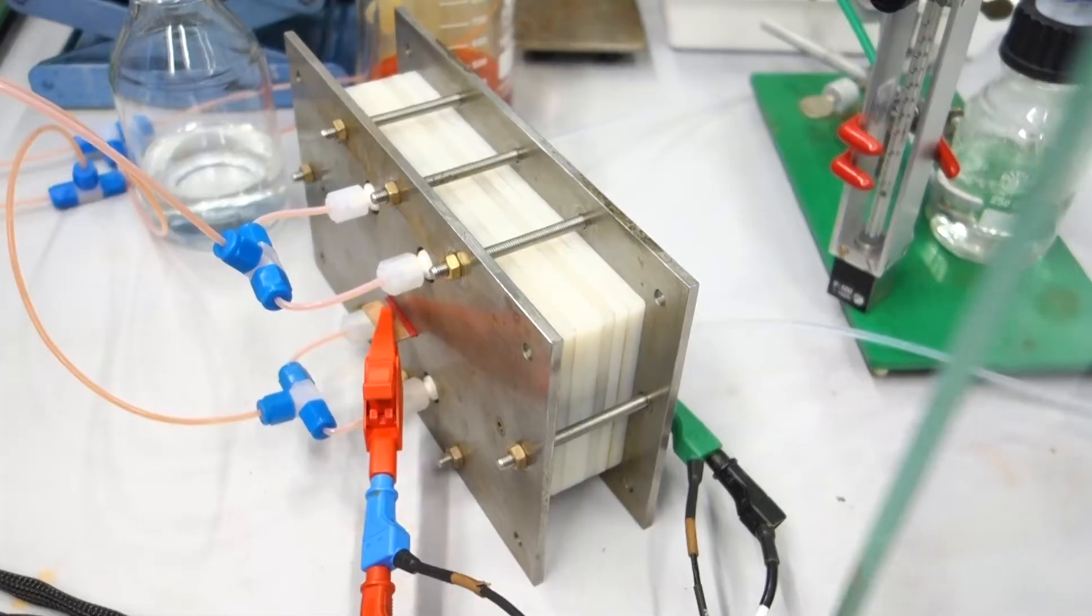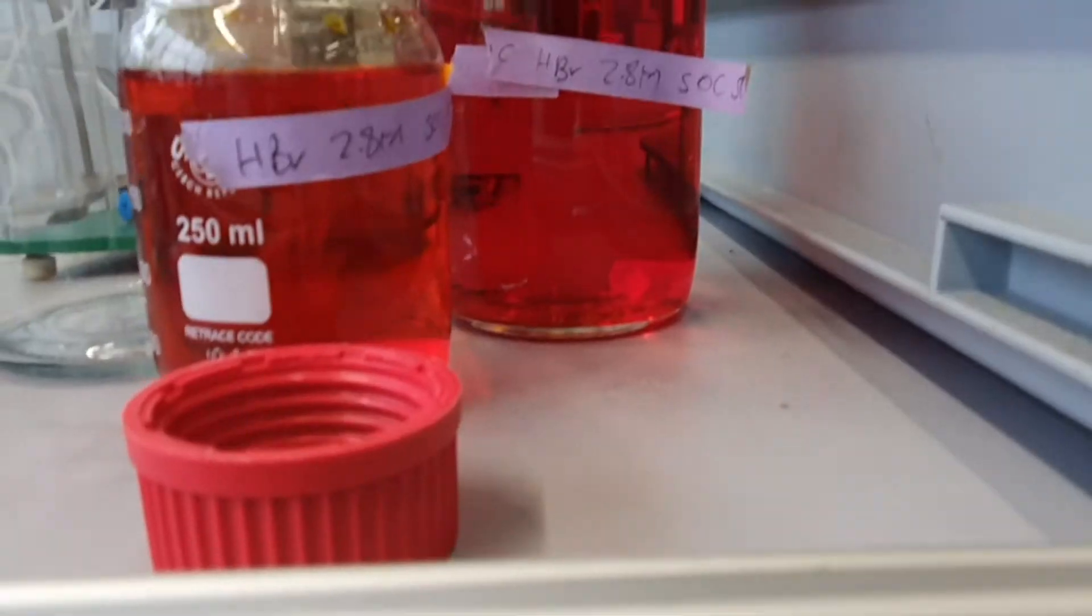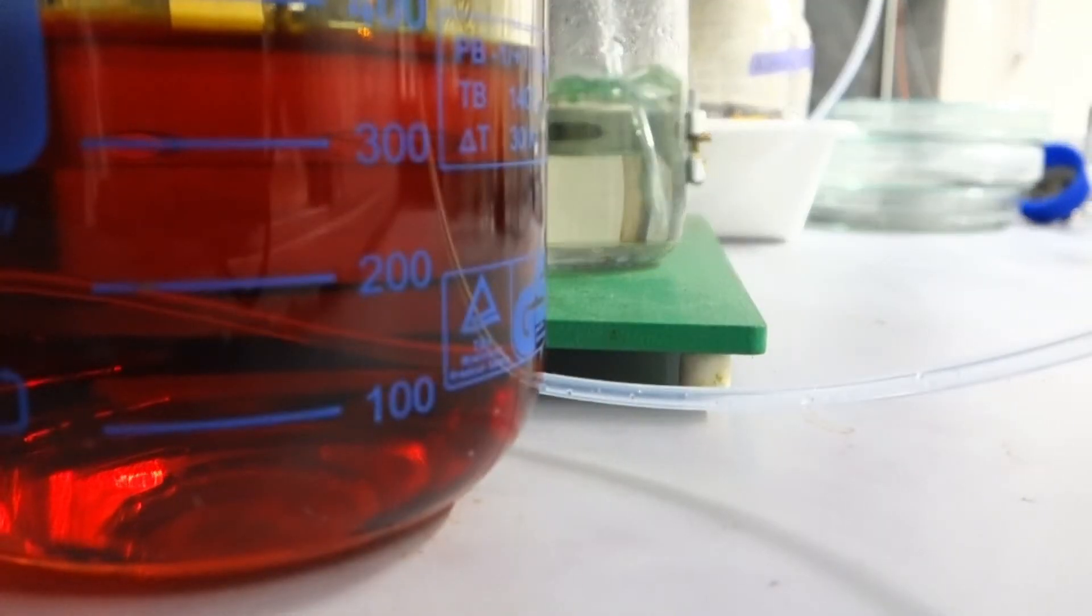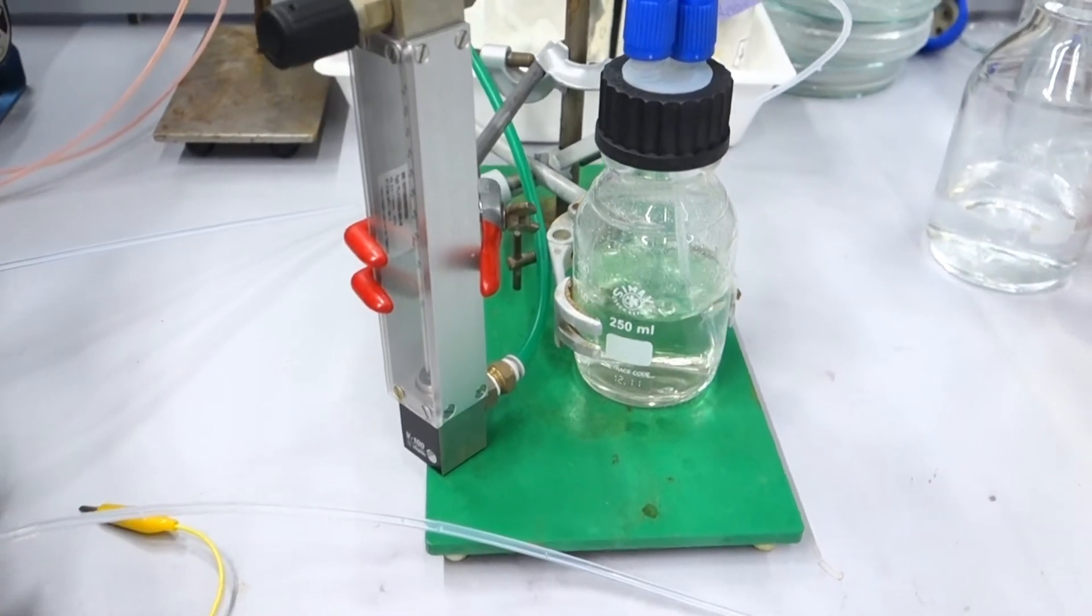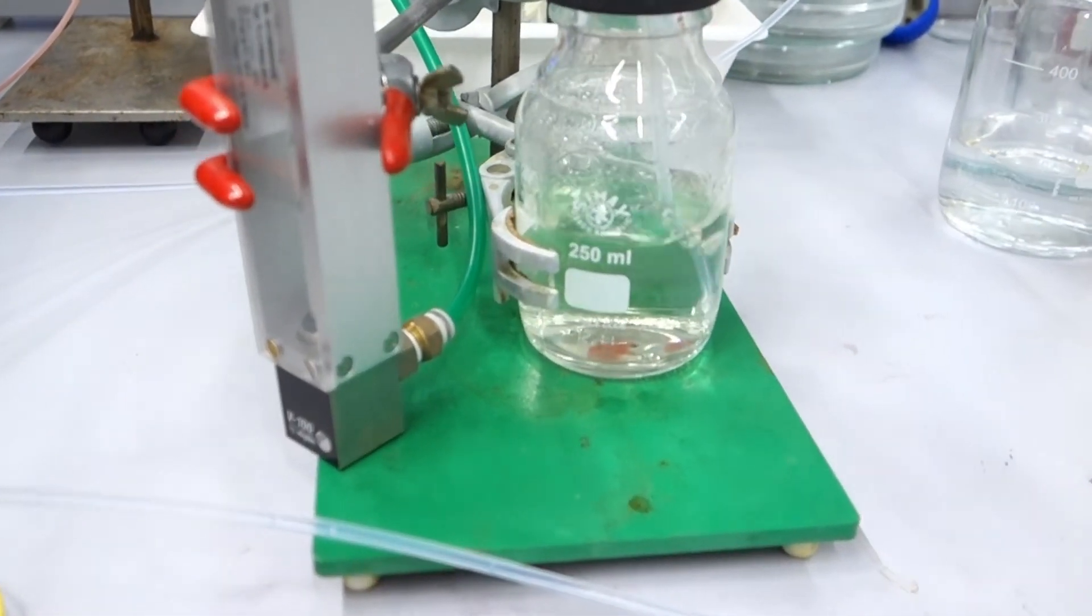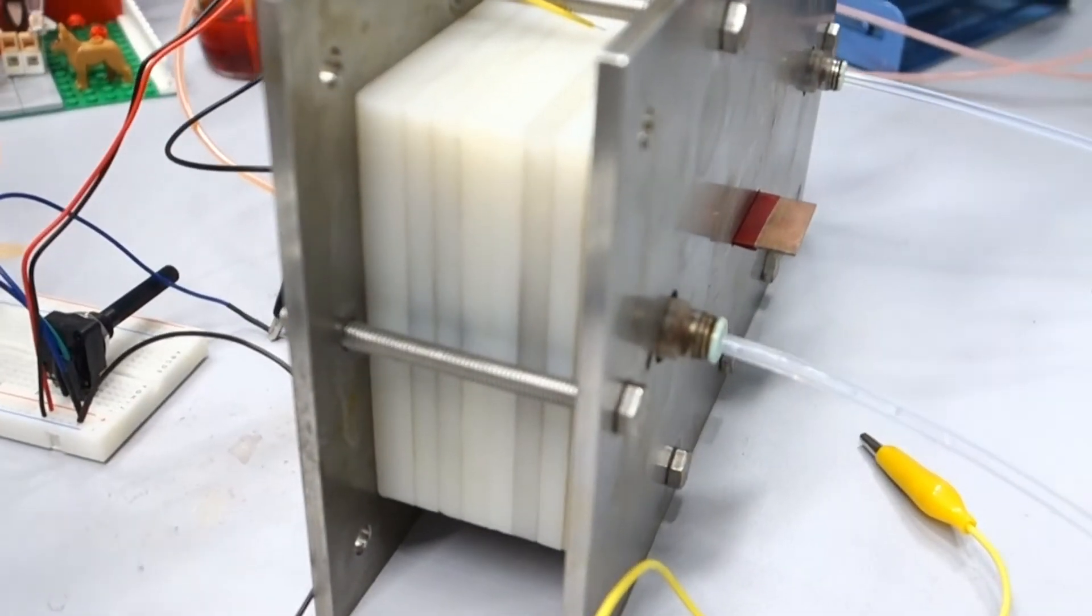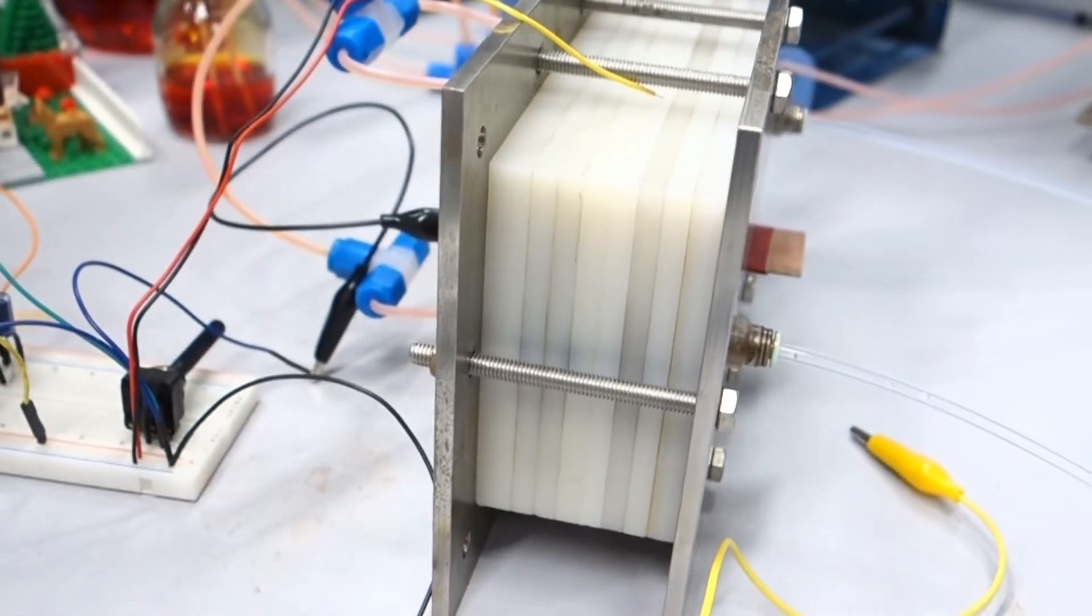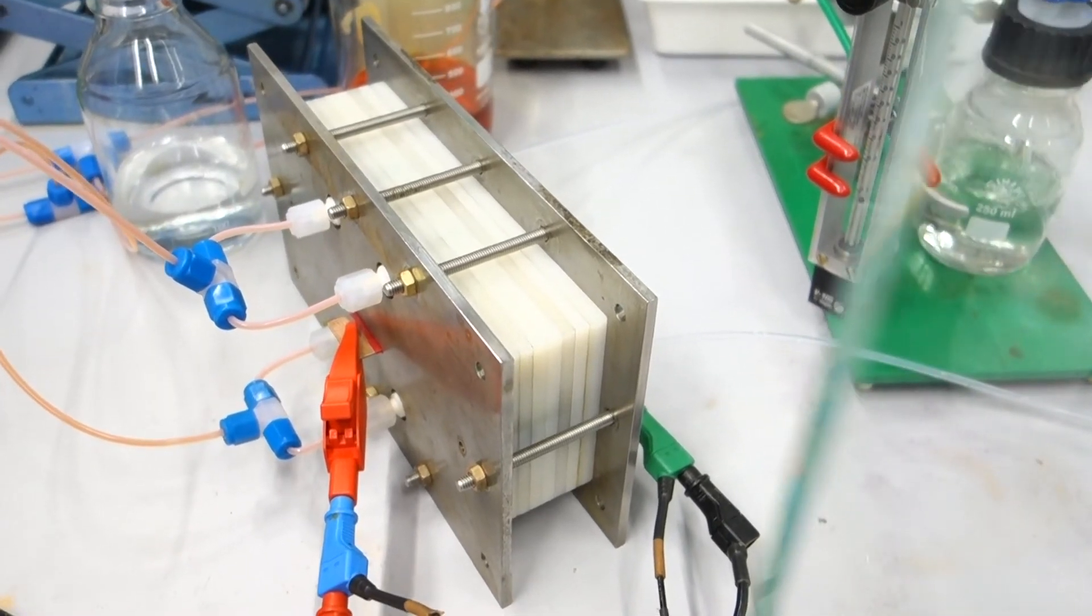Here I have my hydrogen bromine redox flow battery. On one side, I am pumping an aqueous solution of hydrobromic acid and bromine. On the other side, I am circulating hydrogen. This is a two cell stack, that is the flexibility that redox flow batteries give us. We can adapt the voltage output by adding more cells in series.